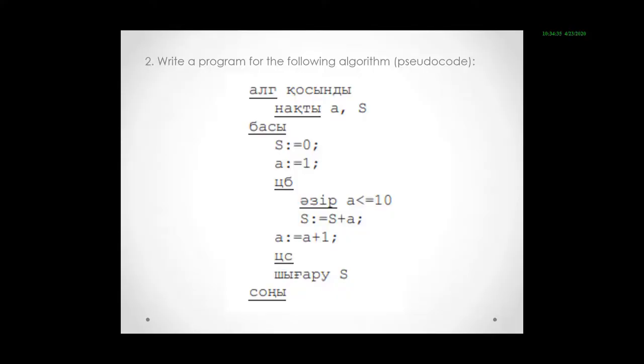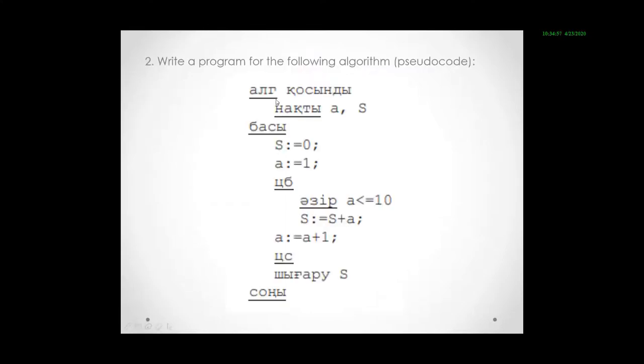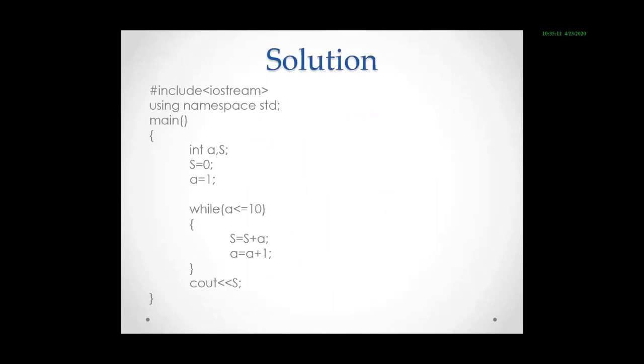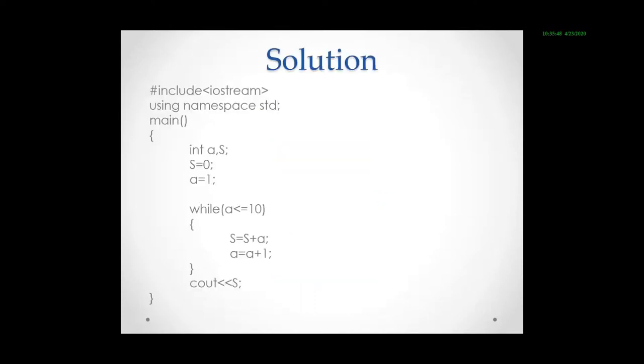If you have done your task, let's compare your results with mine. So here I declare a and s variables and then initialize s by 0 and a by 1, because the same thing is given here in pseudo code. And then in pseudo code here starts cycle. You can choose any kind of cycle, so I chose while cycle. Inside the cycle it checks whether a is less than or equal to 10.